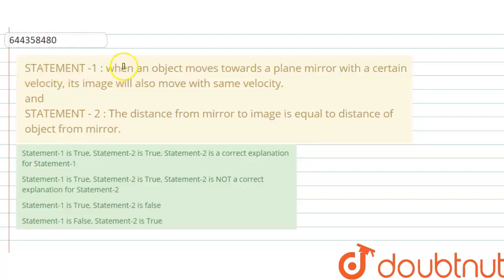Statement one: when an object moves towards a plane mirror with a certain velocity, its image will also move with same velocity. Statement two: the distance from mirror to image is equal to the distance of object from mirror.